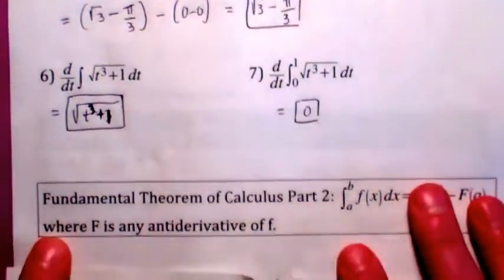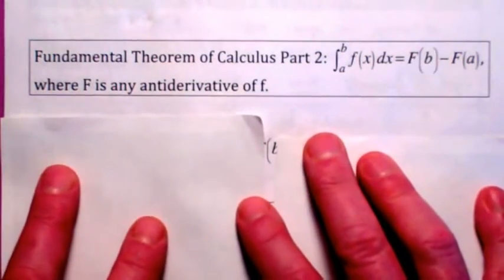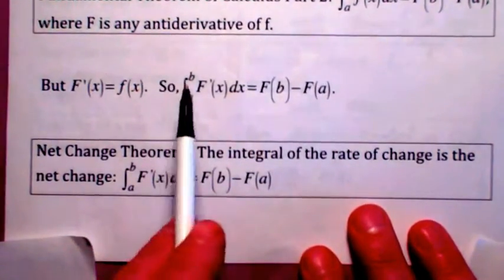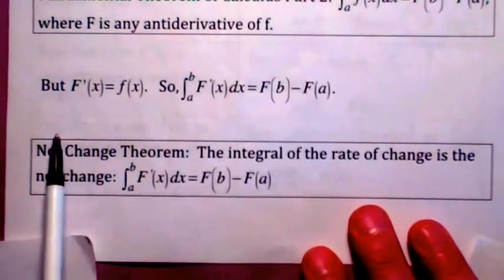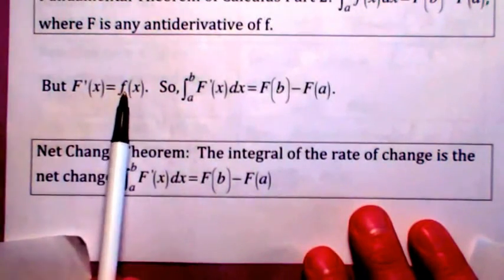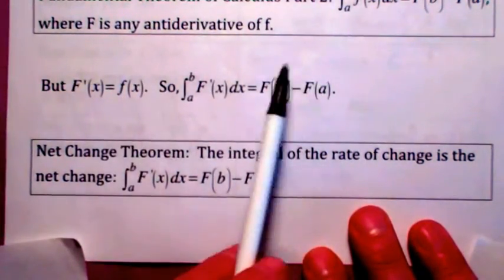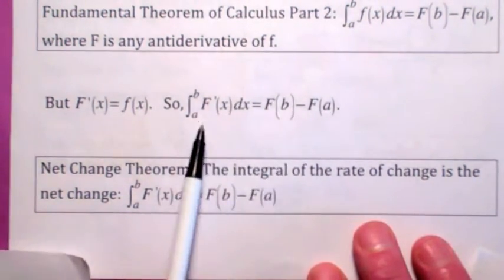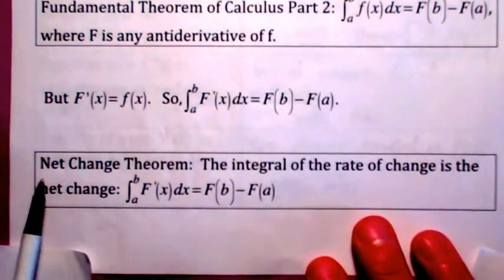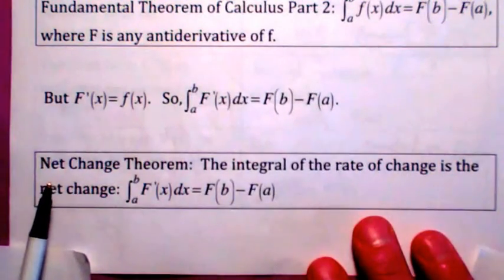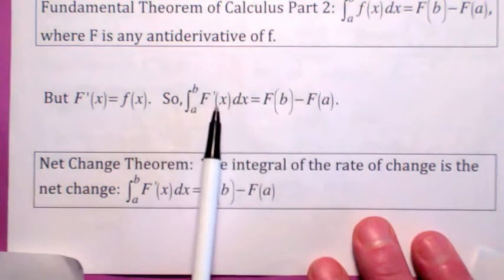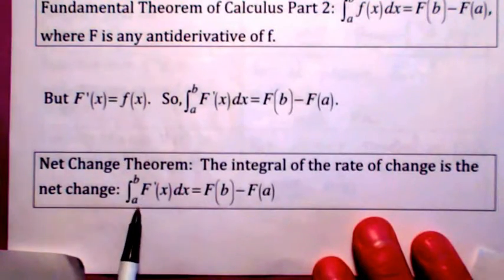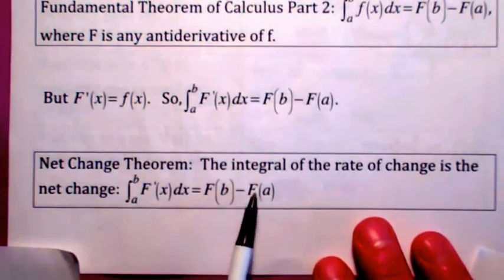The Fundamental Theorem of Calculus Part 2 says that big F is an antiderivative of little f, so by definition, if you take the derivative of big F, you get little f. If you replace little f with big F prime in the fundamental theorem, you get what's called the net change theorem — really just another way of looking at FTC Part 2. If you integrate the rate of change of a function, you get the net change in the function over that interval.